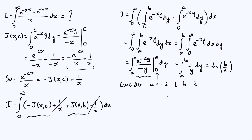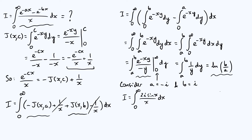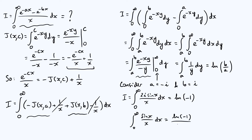This is interesting because of the relationship between complex exponentials and trig functions. Substituting a = -i and b = i into the original integrand gives (e^{ix} - e^{-ix})/x. Using complex trigonometric identities, 2i·sin(x) = e^{ix} - e^{-ix}, so I equals the integral from 0 to infinity of 2i·sin(x)/x dx. If we assume the log expression is still valid, that would be ln(-1), since i/(-i) = -1. This would suggest the integral from 0 to ∞ of sin(x)/x dx equals ln(-1) / (2i).